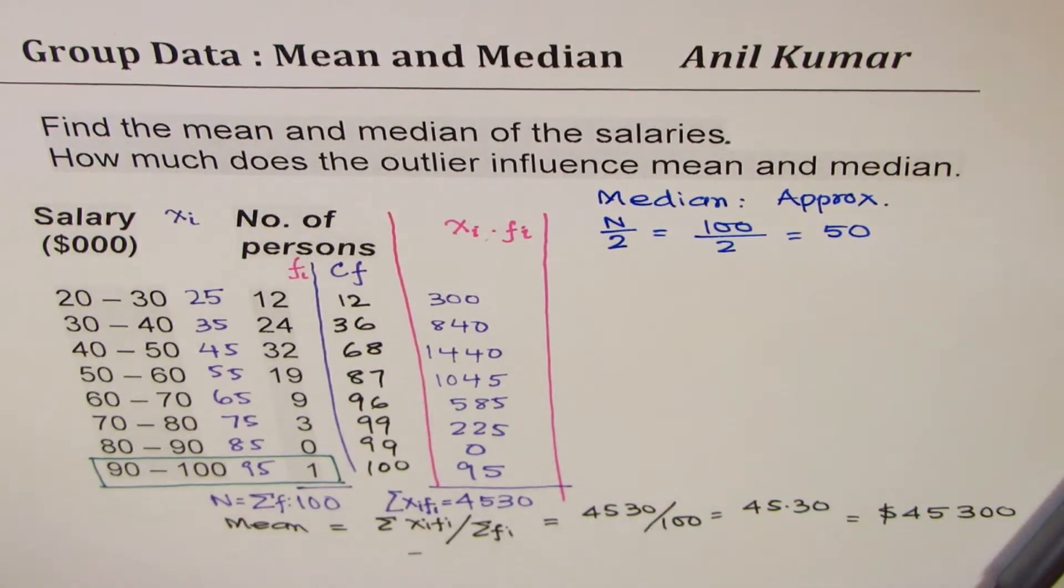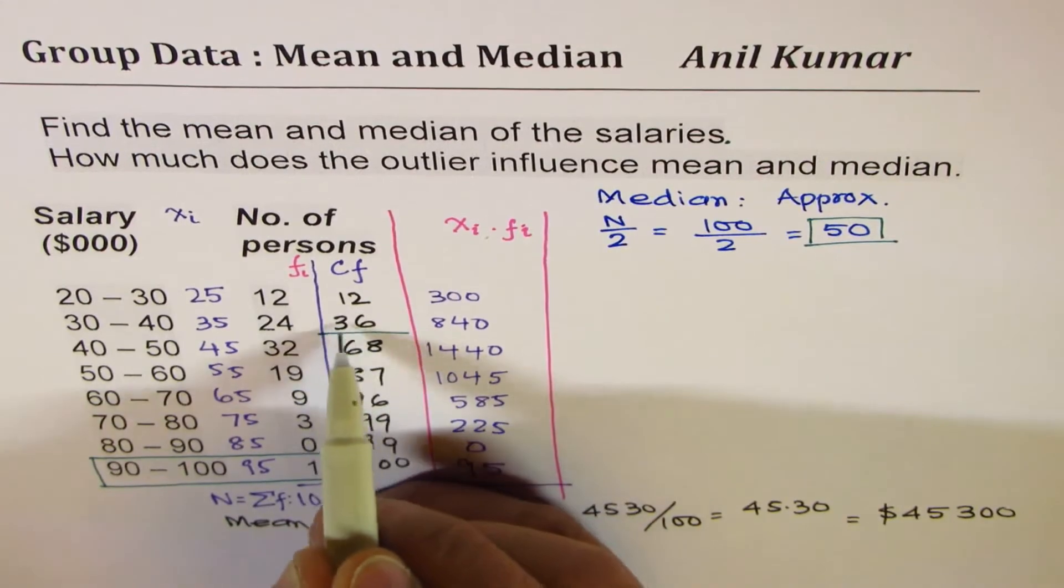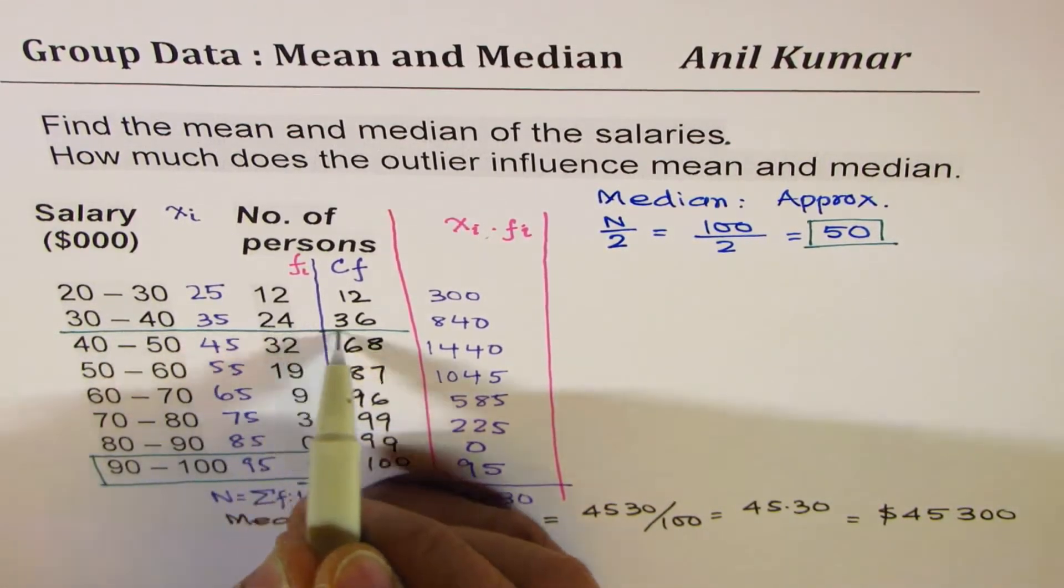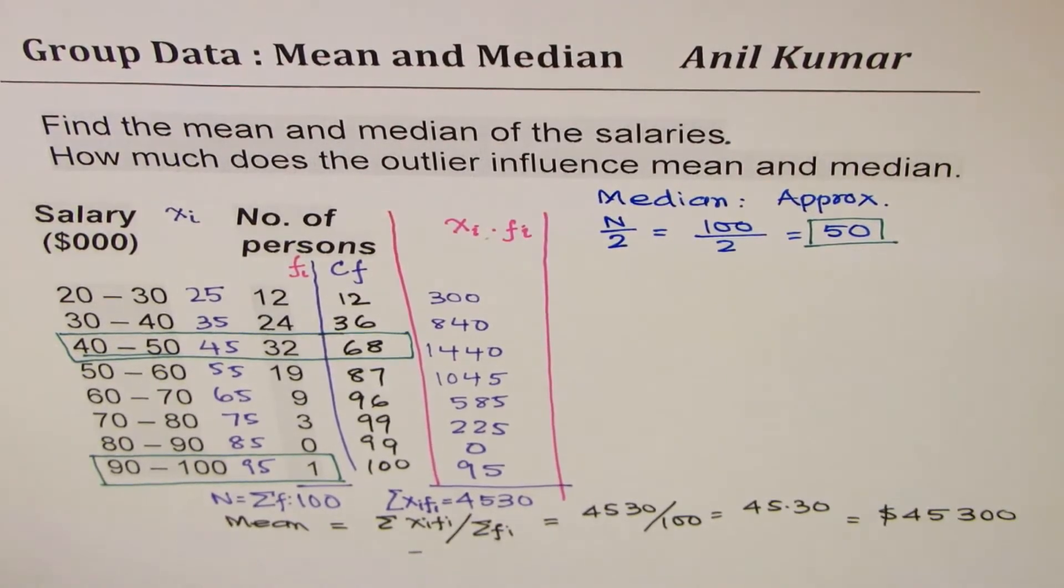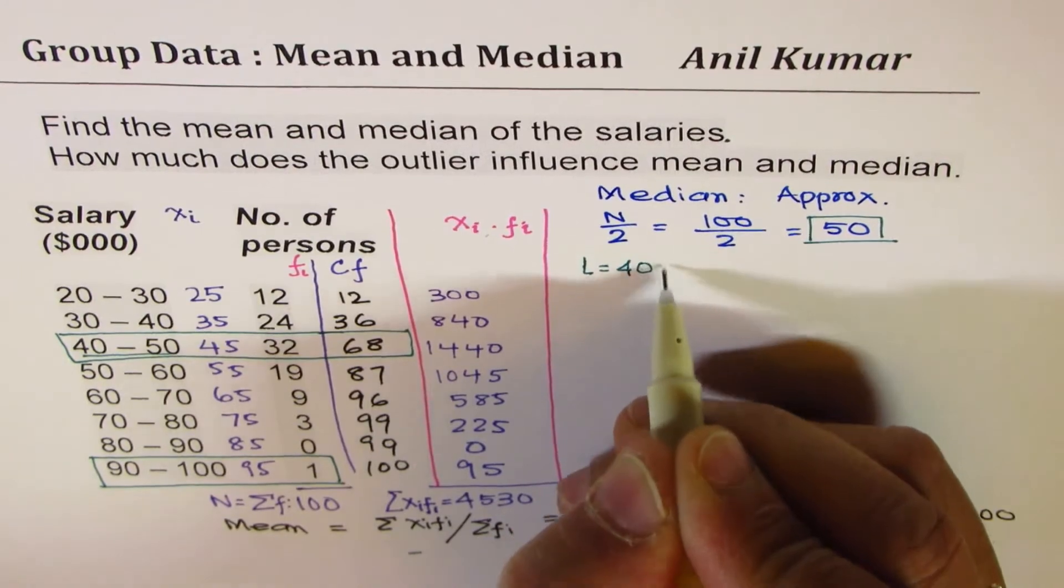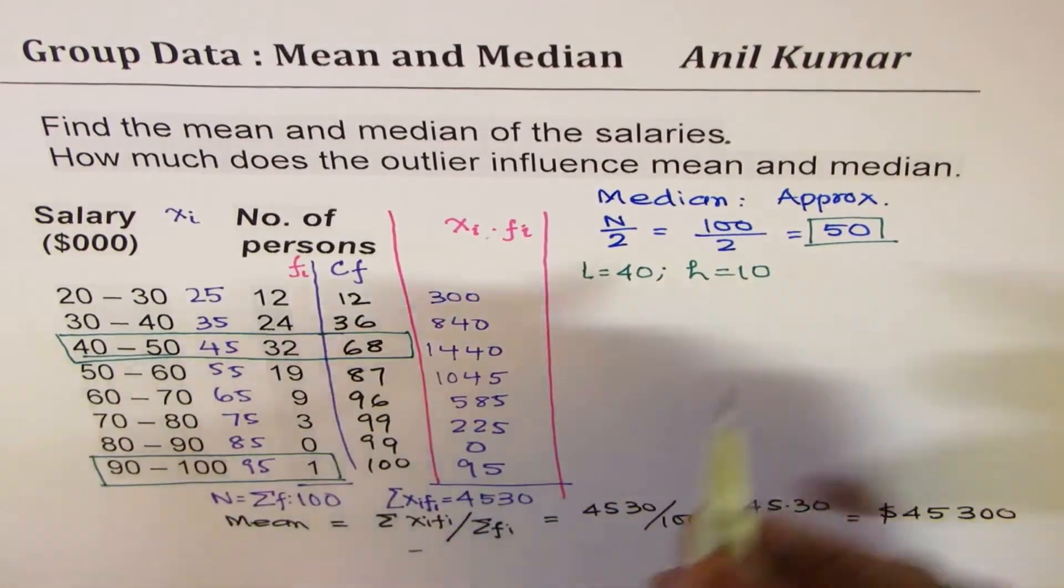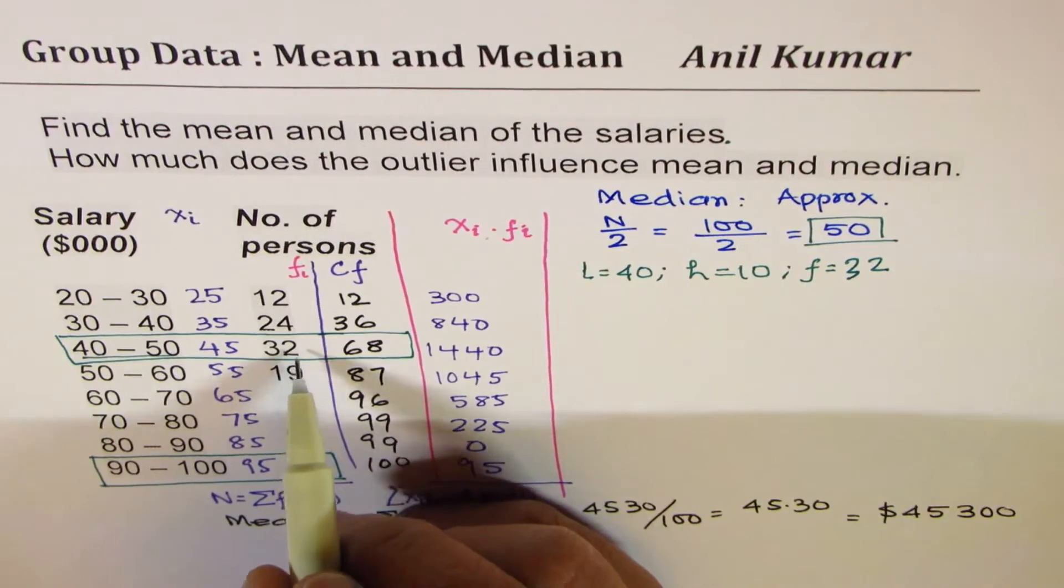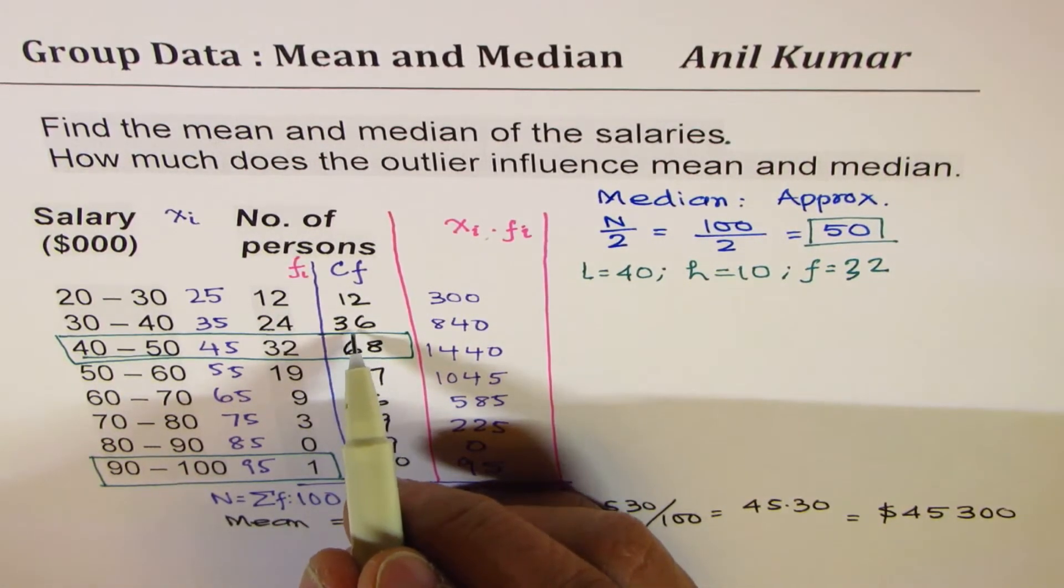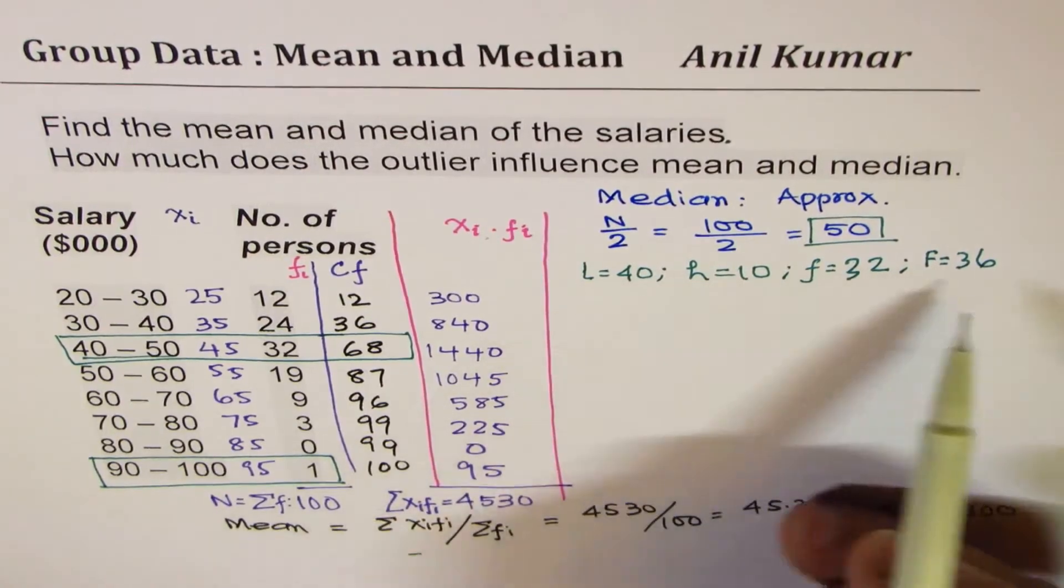Now if you analyze, where is 50? We have to look for 50. Clearly, 50 is above 36. So the class which hides the answer is this one, 40 to 50. So that is the class of our interest. In this class, the lowest value is 40 for us. The class interval, which we say H, is actually equal to 10. And the frequency of this class F is 32. And the frequency before, the cumulative frequency before this, is 36. We say F is 36.